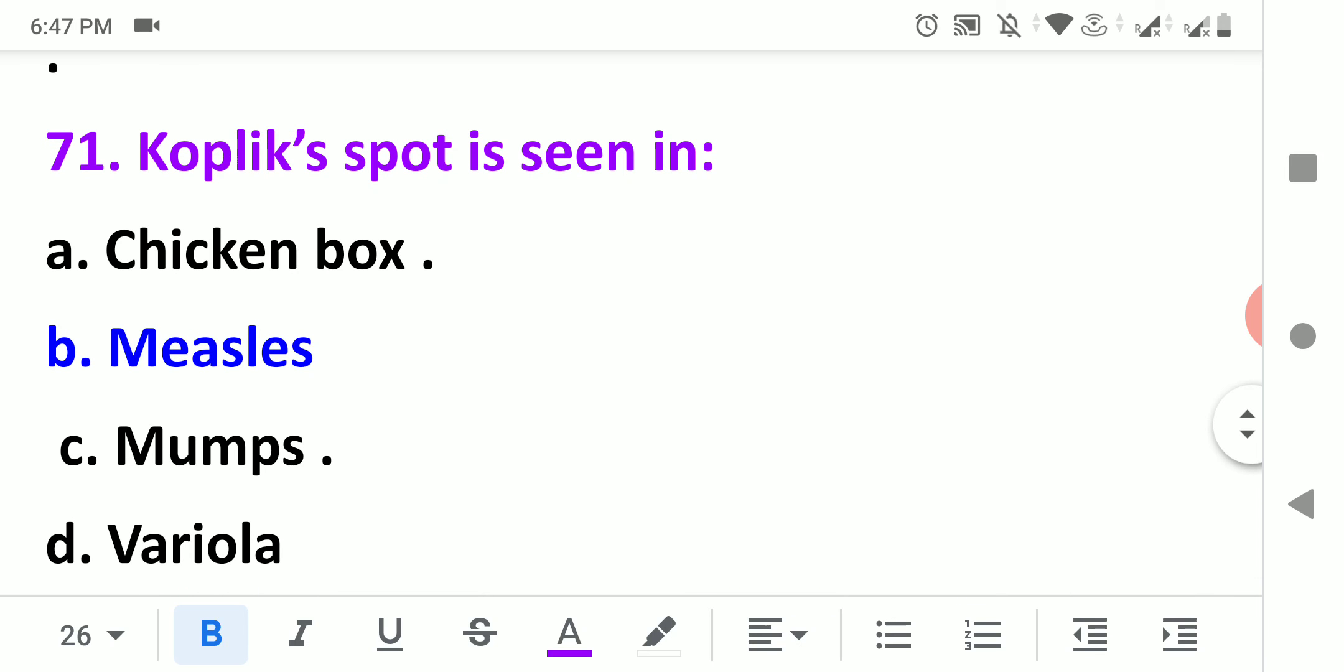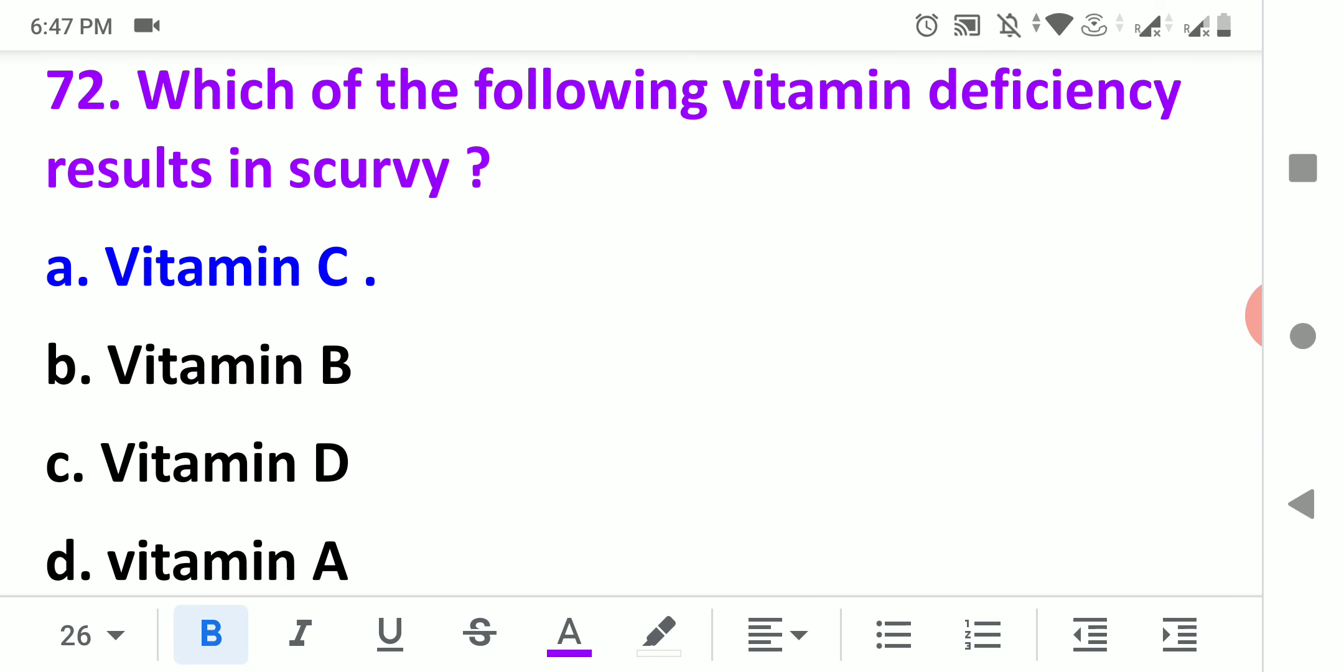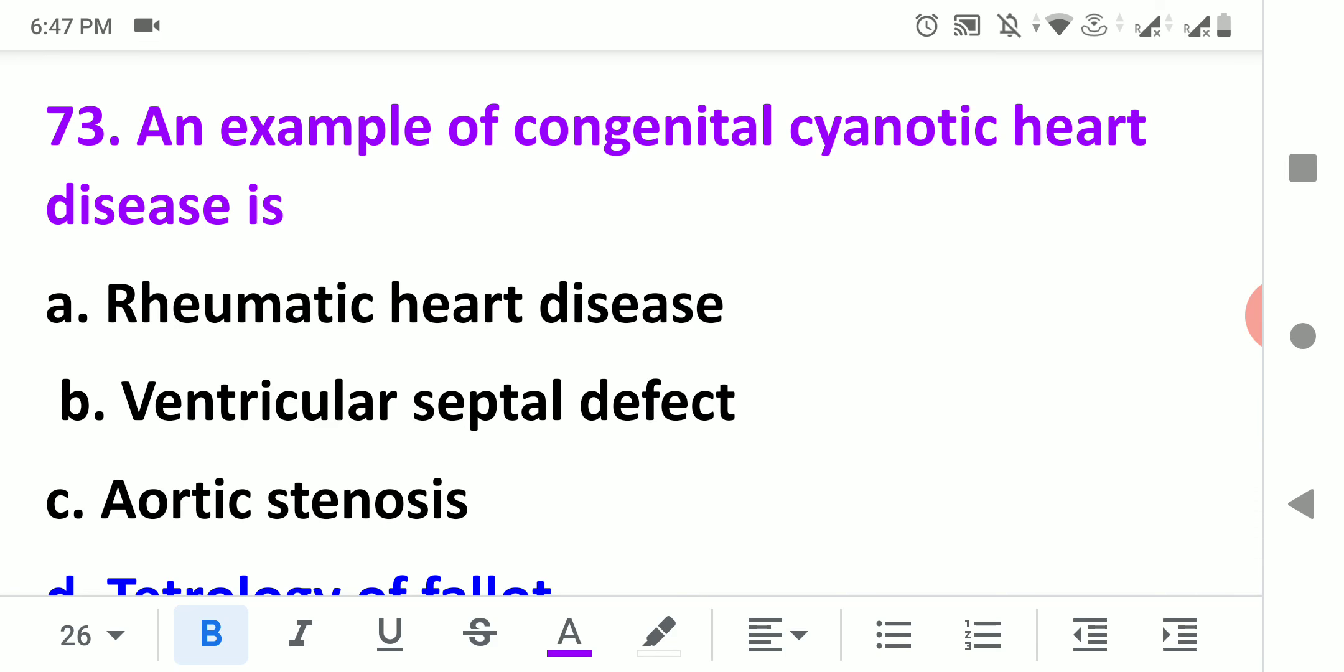The most common complication that occurs after renal biopsy is hemorrhage. Koplik spot is seen in measles. Which of the following vitamin deficiency results in scurvy? Vitamin C deficiency causes scurvy.